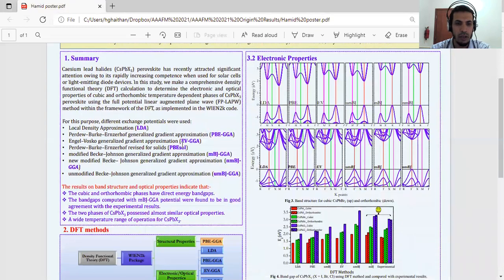In this work, we will use the WIEN2K code and we can select six methods: LDA, PBE, EV, PBE Sol, MBJ, new MBJ, and modified MBJ GGA. These methods are very important.